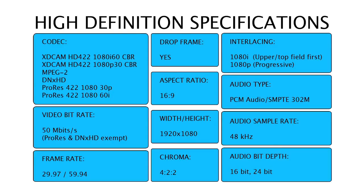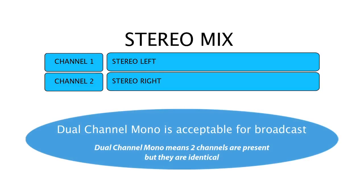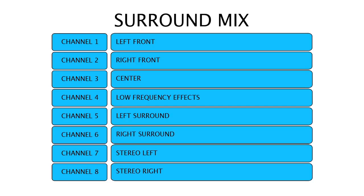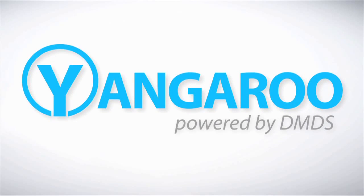We strongly recommend you utilize our preferred video codecs: XD cam or MPEG-2. Audio configuration on all spots should be stereo dual channel; mono is accepted. If your file is 5.1 or surround sound, it should be configured accordingly. For assistance, contact us at adsupport@yangaroo.com or our support line at 866-992-9902. Thank you for watching and for choosing Yangaroo DMDS.